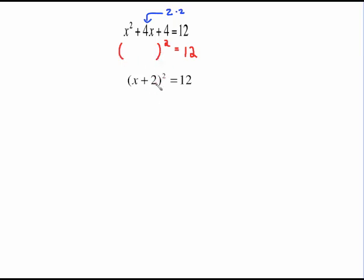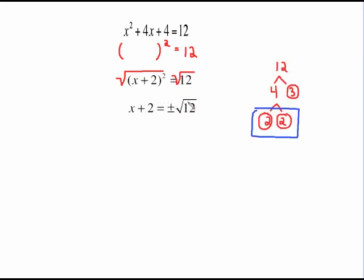Now that it's written as some quantity squared, we can just follow the rest of those steps. Take the square root of both sides — we get x plus 2 on the left side, and plus or minus the square root of 12 on the right. Square root of 12 factors out like this: we have a pair of 2's, so there'll be a 2 in the front. Then subtract 2 from both sides and we have negative 2 plus or minus 2 times the square root of 3.